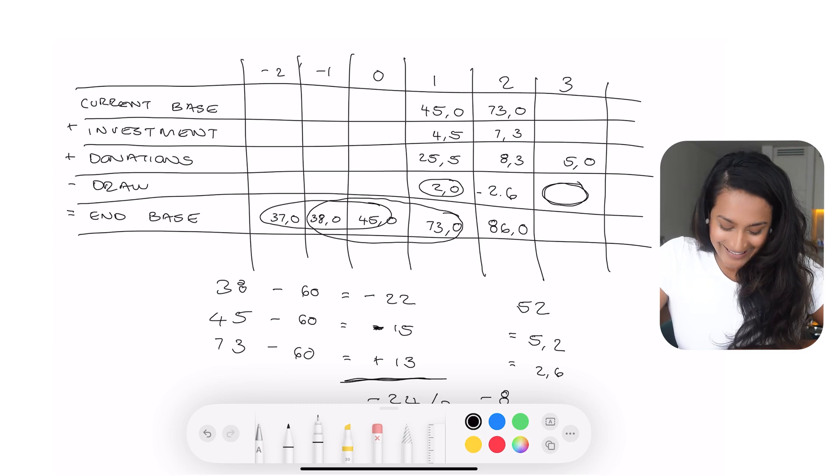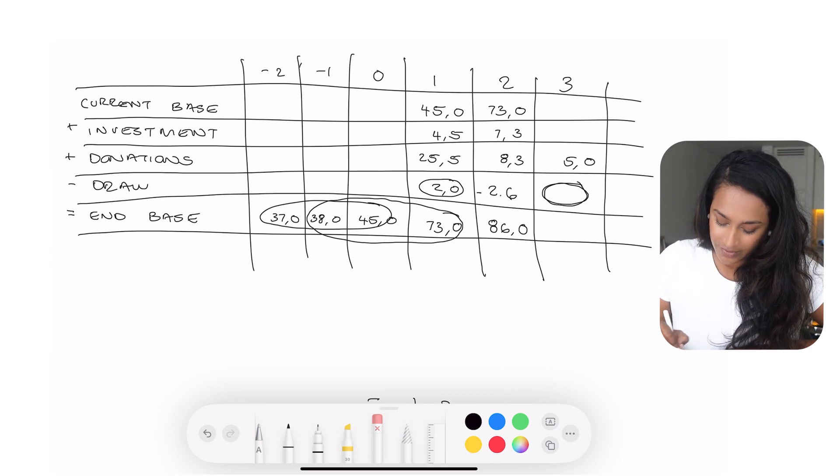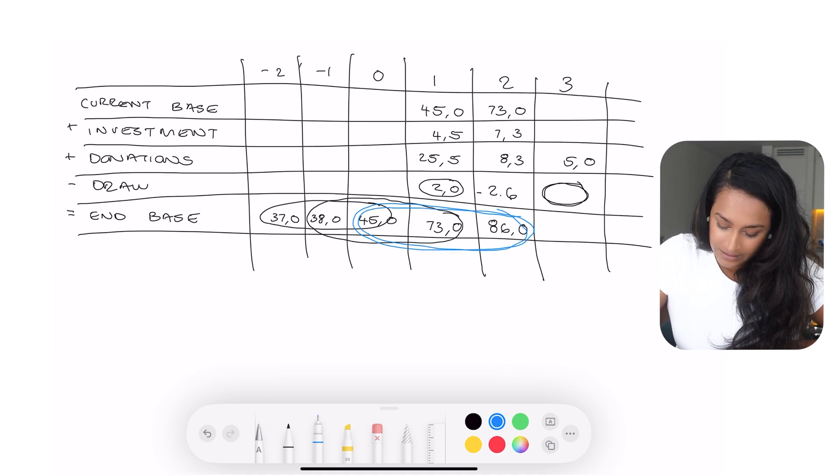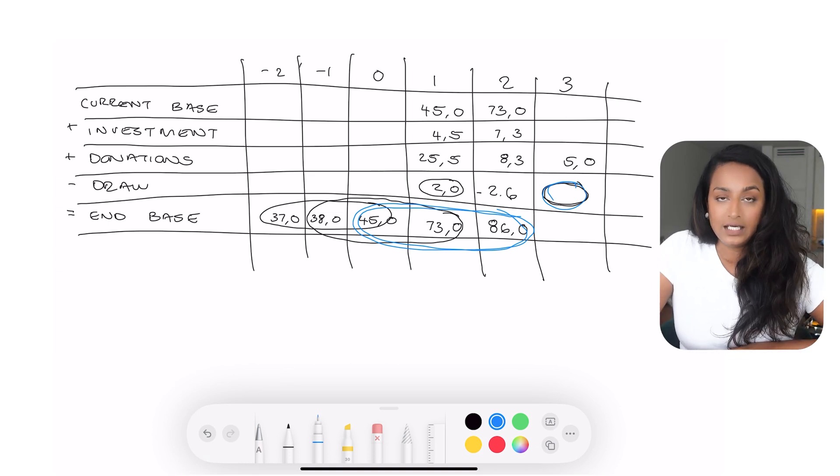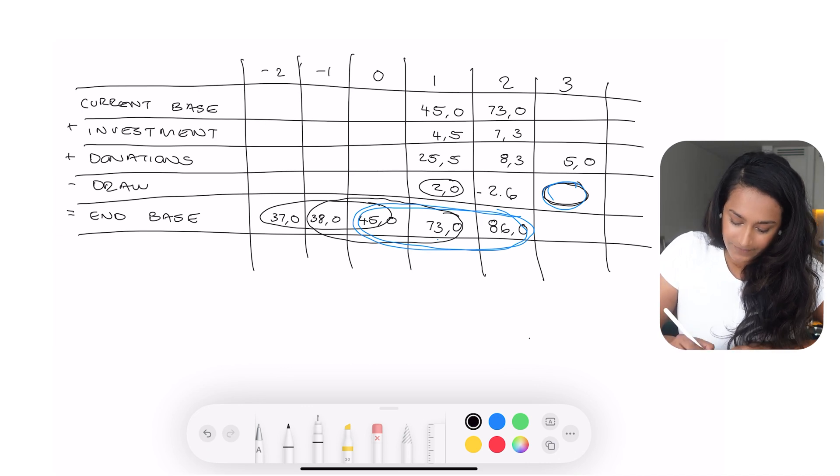Now I can finally calculate the draw of year three, and I'm going to do that. I don't need to do any of the other calculations, because as you will notice, to get to the draw of year three, all I need actually is the end base of the prior three years, which I already have right there. So this number will just be five percent of the average of the prior three years. So I'm going to do the residual method one last time, and we'll get to that number.